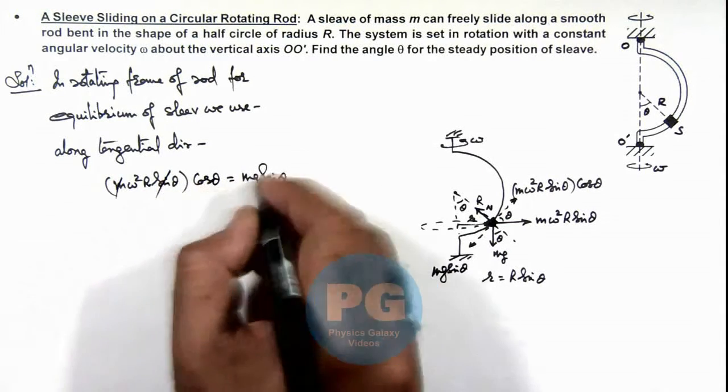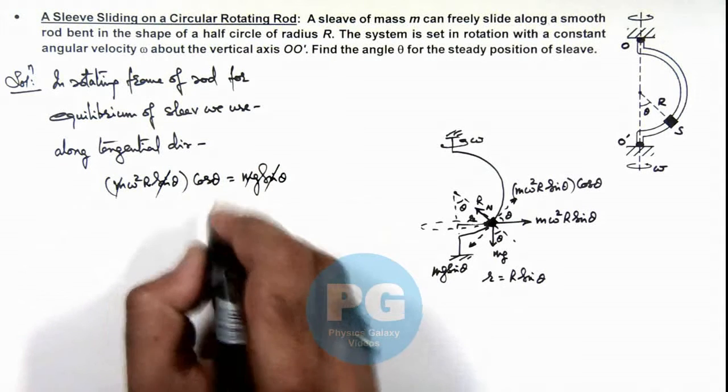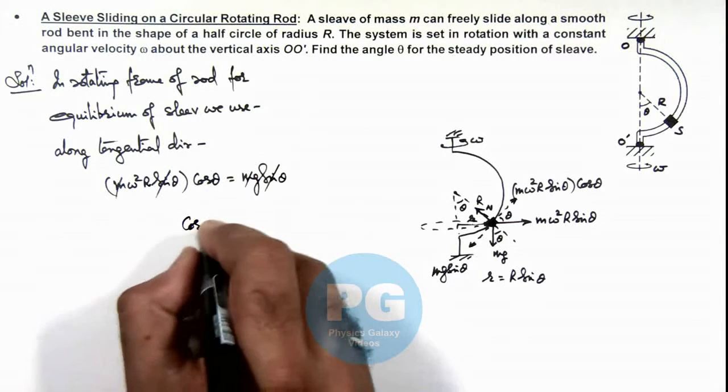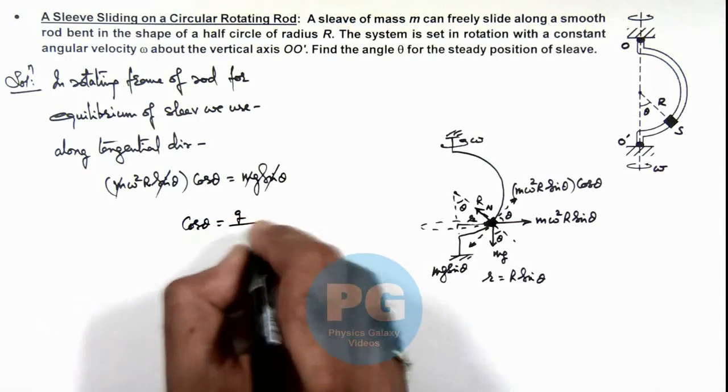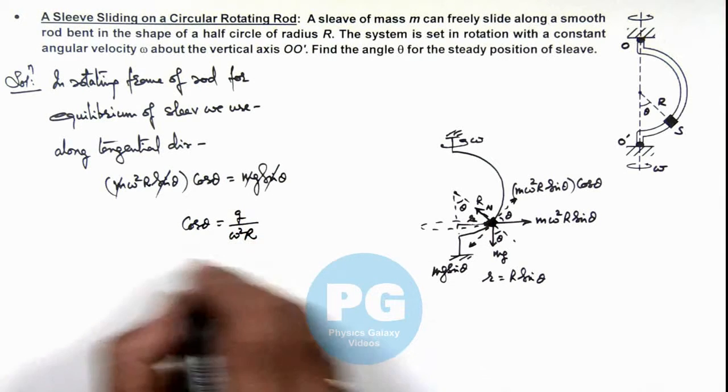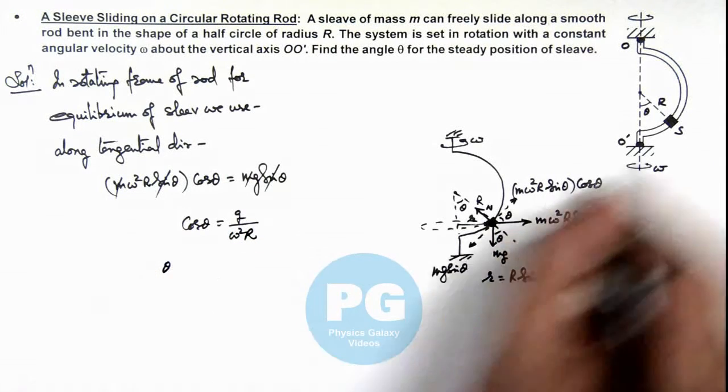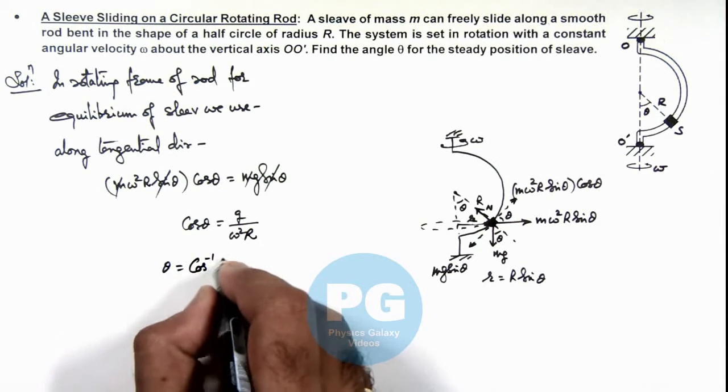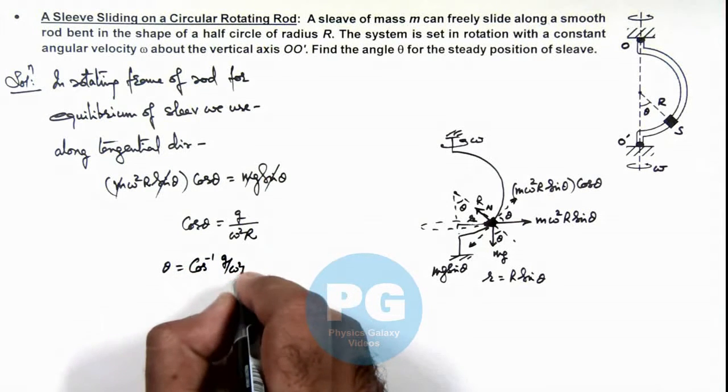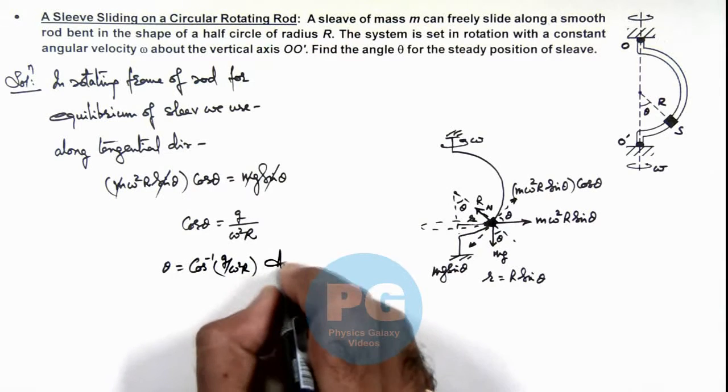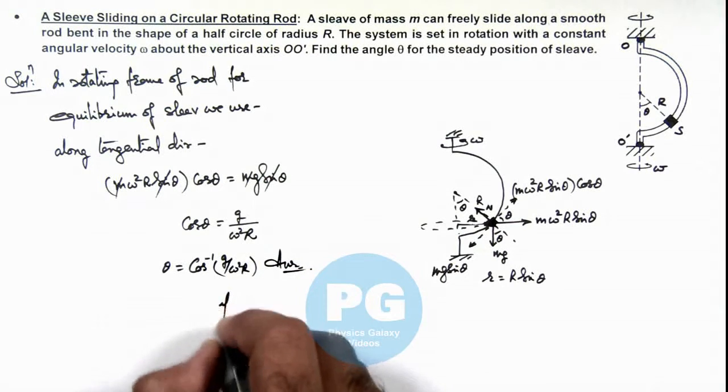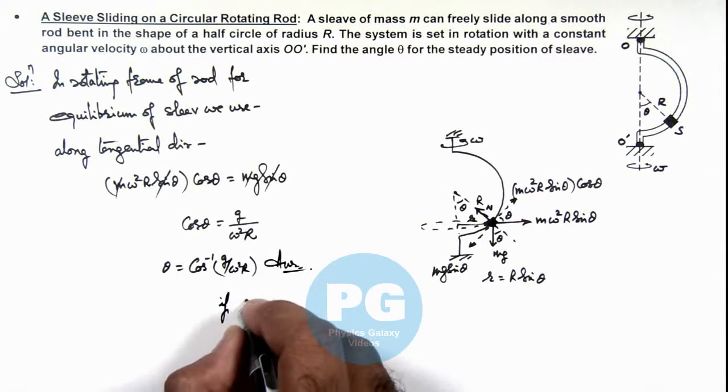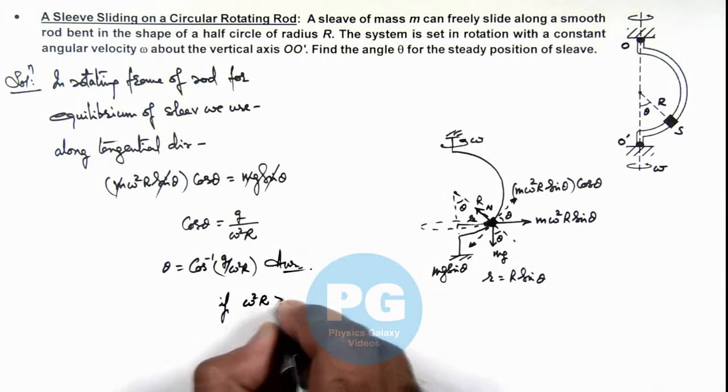Here m and sin θ get cancelled out, and we are getting the value of cos θ is equal to g/(ω²R). So the angle at which the sleeve will remain in equilibrium will be given by θ = cos⁻¹(g/(ω²R)). This will be the final result of the problem if the value of ω²R is greater than g.